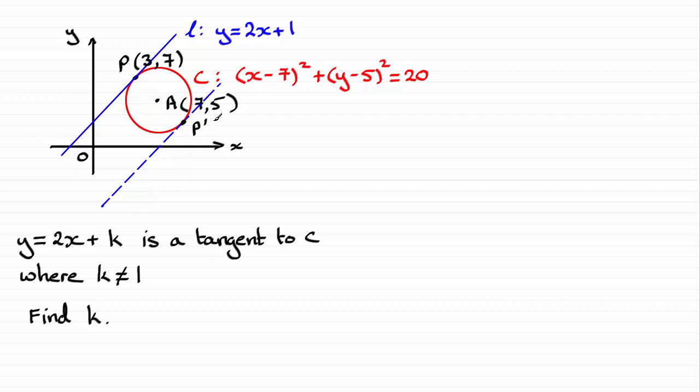But it does rely on us getting the coordinates of p dash. But that's very easy because the displacement from p to a has to be exactly the same as the displacement from a to p dash, because it's the radius of the circle. And p dash lies along that diameter from p through a to p dash.